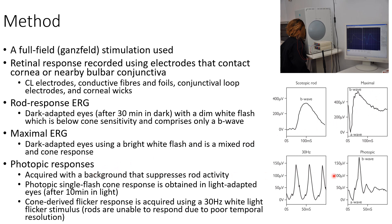This is a photopic ERG and it is acquired with a background that suppresses rod activity. Photopic single flash cone response is obtained in light-adapted eyes after 10 minutes in light. Cone direct flicker response is acquired using a 30 Hz white light flicker stimulus. The rods are unable to respond due to poor temporal resolution, as you can see in this picture.